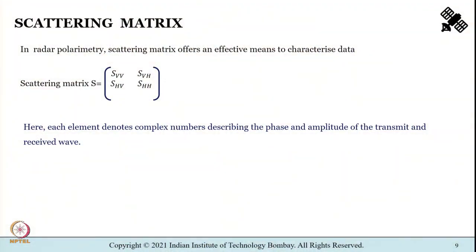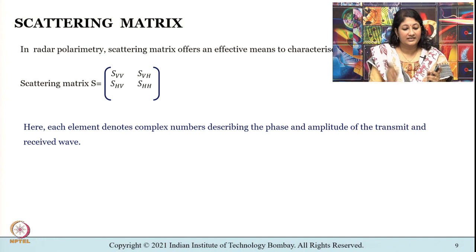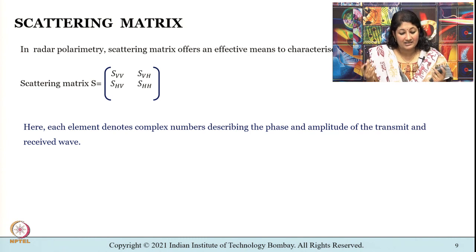Moving on, in radar polarimetry the scattering matrix it offers an efficient means to characterize the data, an efficient means to characterize the data. The scattering matrix is shown here as S. Here each element that is SVV, SHV, SVH, SHH, each element denotes complex numbers describing the phase and amplitude of the transmit and received wave.